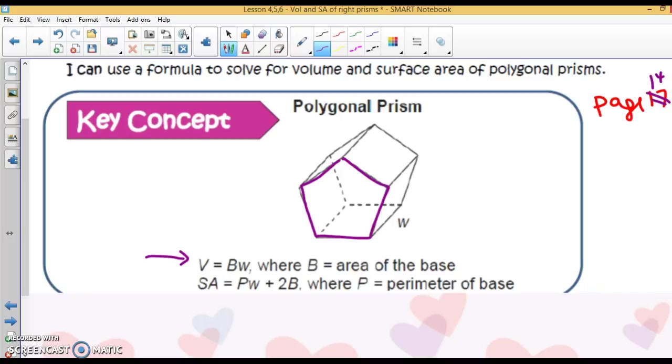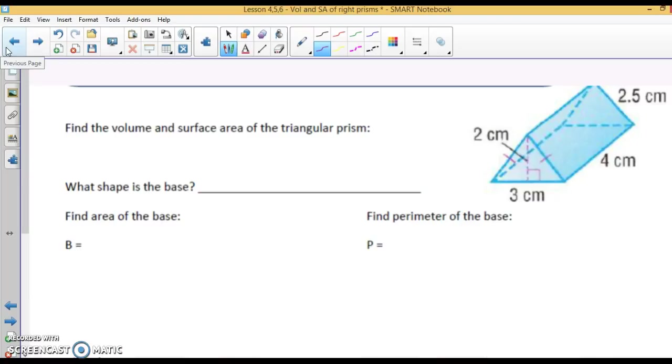Now if we have a rectangular prism, you're using the formula we did yesterday. Let's take a look at a couple of examples. Find the volume—we're only doing volume today—of this triangular prism. Well, here's our base. What shape is the base? It is a triangle. As soon as we know that it's a right prism, we know we're going to use this formula: Volume equals capital B times W. Capital B is the area of the base.